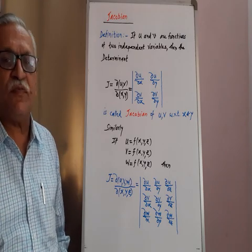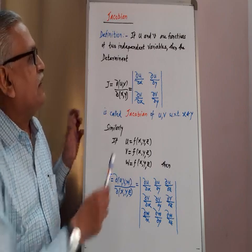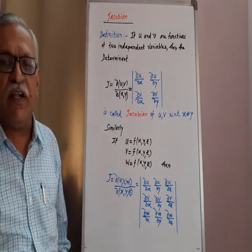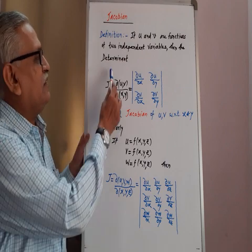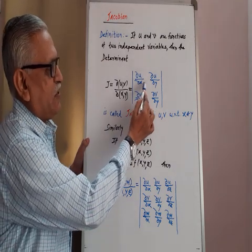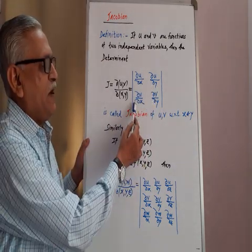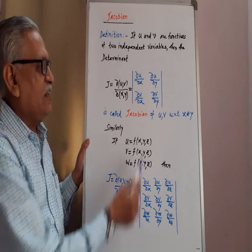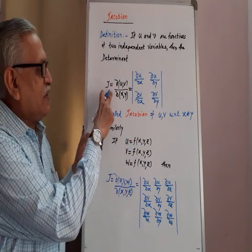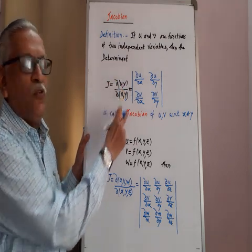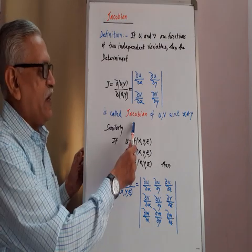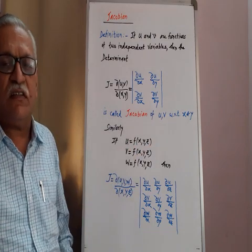Hello friends, let us see the definition of the term Jacobian. If u and v are functions of two independent variables x and y, then the determinant containing the four elements ∂u/∂x, ∂u/∂y, ∂v/∂x, ∂v/∂y is called the Jacobian, and it is denoted as ∂(u,v)/∂(x,y), called the Jacobian of u, v with respect to x and y.